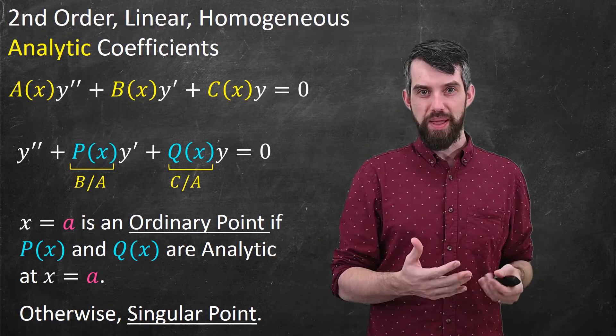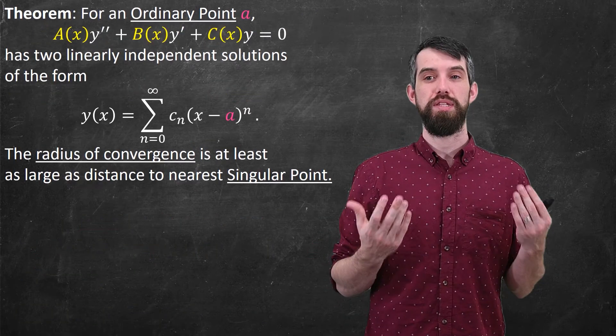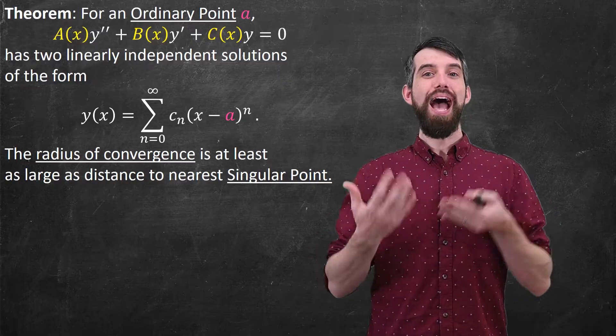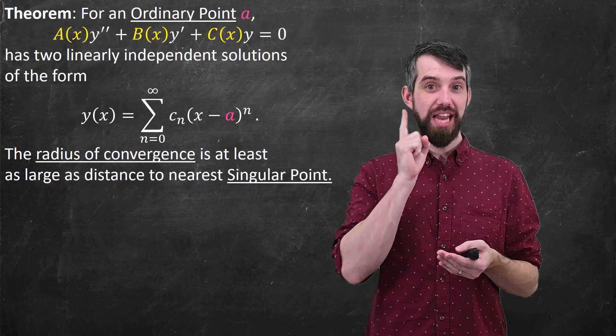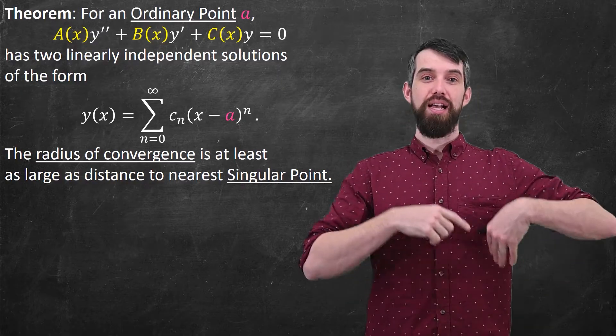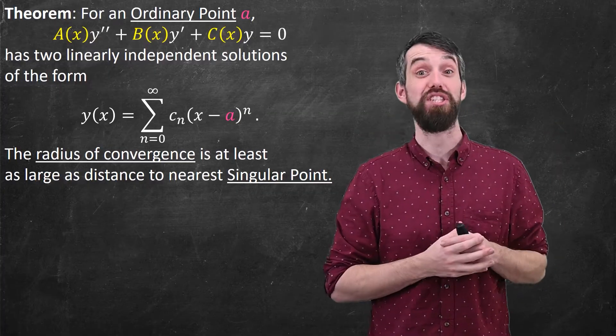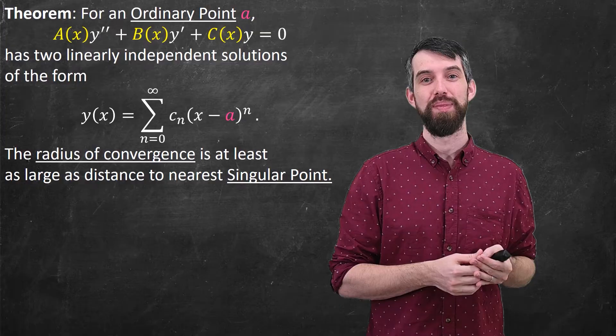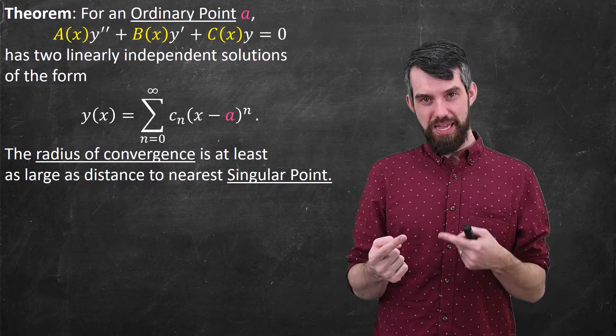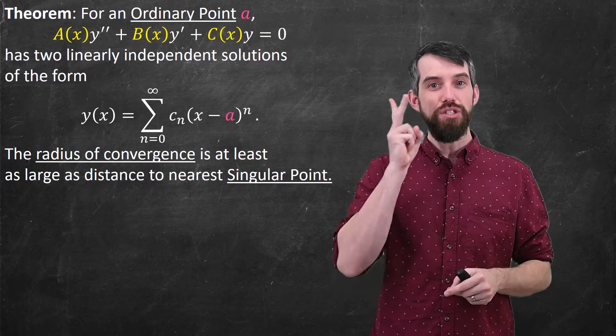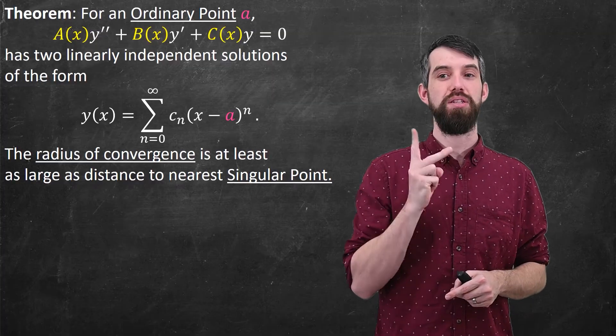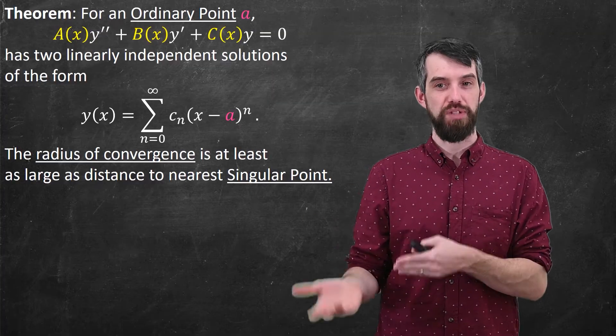So with that definition made, here's the big theorem that we're going to talk about in this video. Suppose that you have an ordinary point, the type that you like, to this second-order, linear, homogeneous solution with analytic coefficients, as we expressed in the previous slide. Then the claim is that an equation of this type has two linearly independent solutions that can be expressed in terms of series.